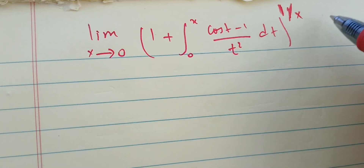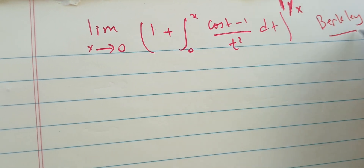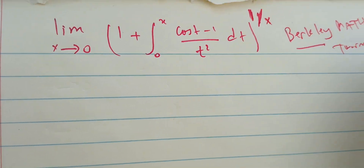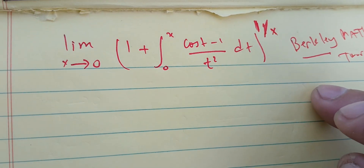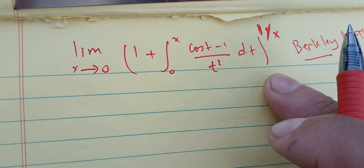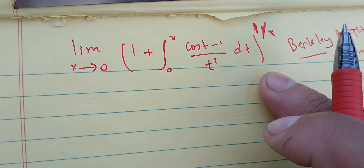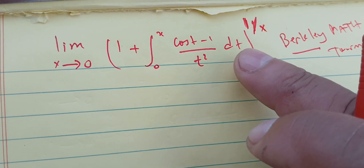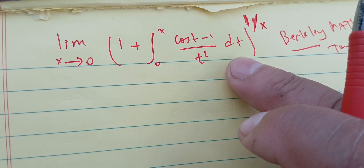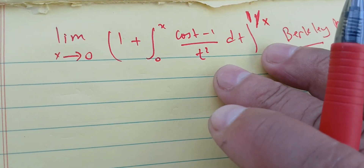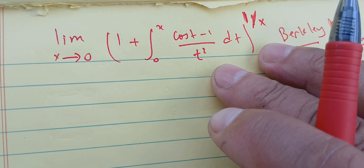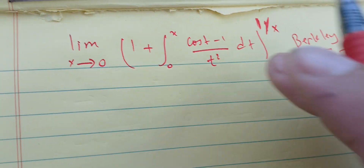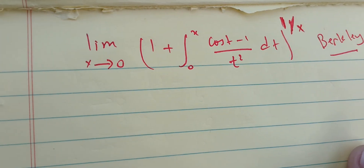This question is from the Berkeley math competition calculus problems, so this is a Berkeley tournament question. That means this one requires a bit of work. We can solve it using L'Hôpital's rule, but actually we're going to use approximations by series instead. Series are very important to compute these limits and integrals.